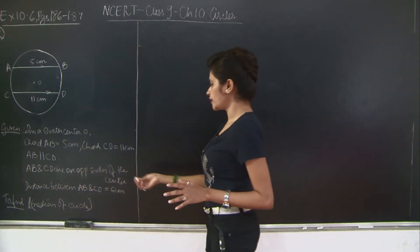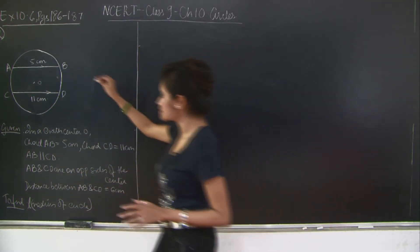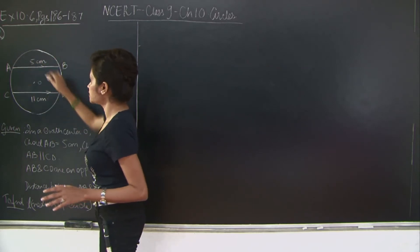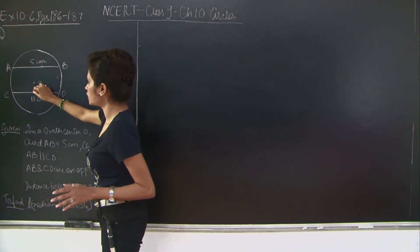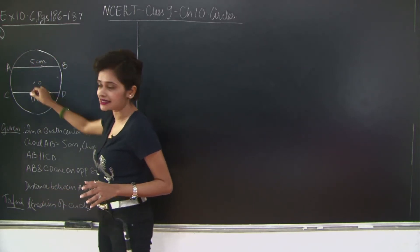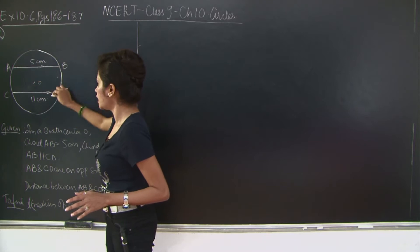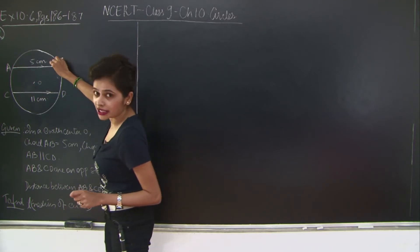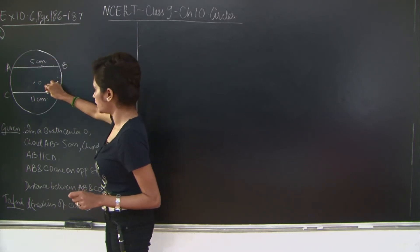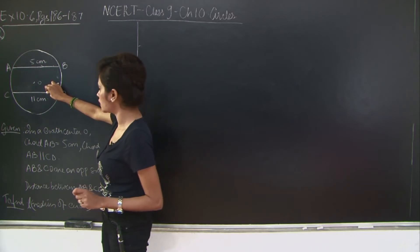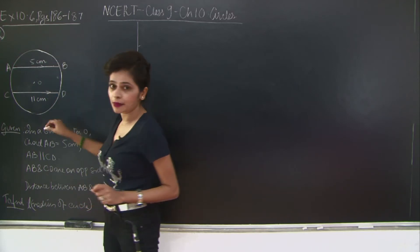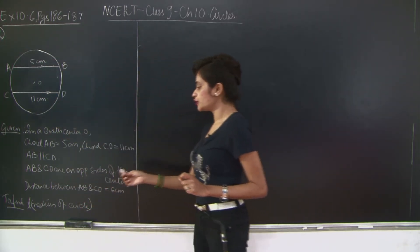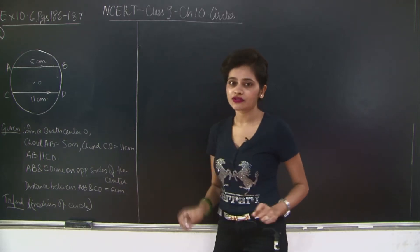We need to find the radius, and the perpendicular distance between the two chords is 6cm. If you mark a perpendicular from any point on AB to any point on CD, that perpendicular length would be 6cm. You need to find the radius of the circle.